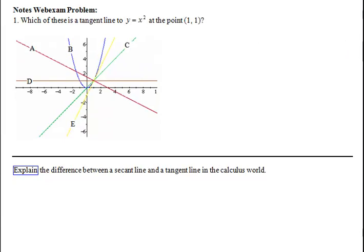Hopefully that's enough for you to know what is visually a tangent line and what will visually be a secant line. I'd like you to try this notes webexam problem number one. Do it in your notes for right now. Don't do it online until we've done all the notes webexam problems for the section. When you're done with this one on your paper, explain in your own words the difference between a secant line and a tangent line in the calculus world.